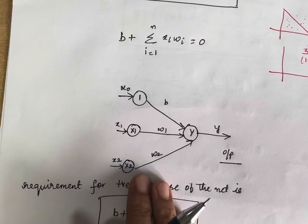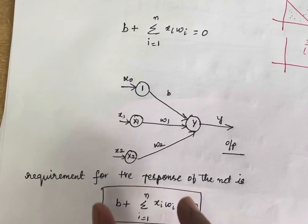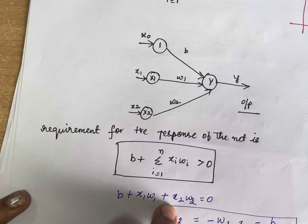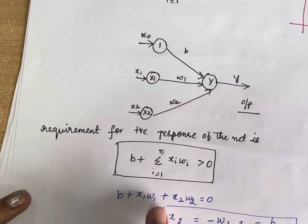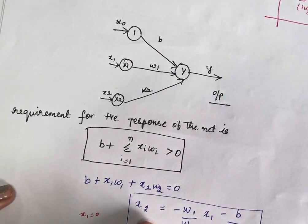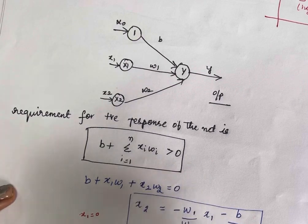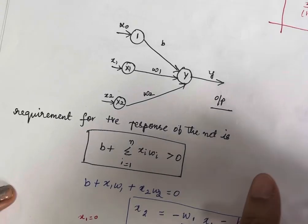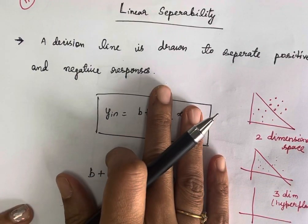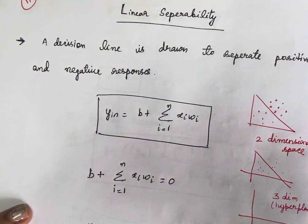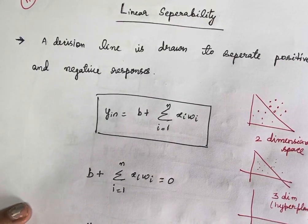What you will be doing in this linear separability class is finding a decision line to determine whether a particular network can differentiate the positive class from the negative class. Given any network, you write the equation, equate it to zero, move the B and x1·w1 terms to the right-hand side, and find the value for x2 to draw the line. I hope you have understood the concept of linear separability. You will be using this in the next network called the HEP network, which we will see in the next lecture. Thank you all.